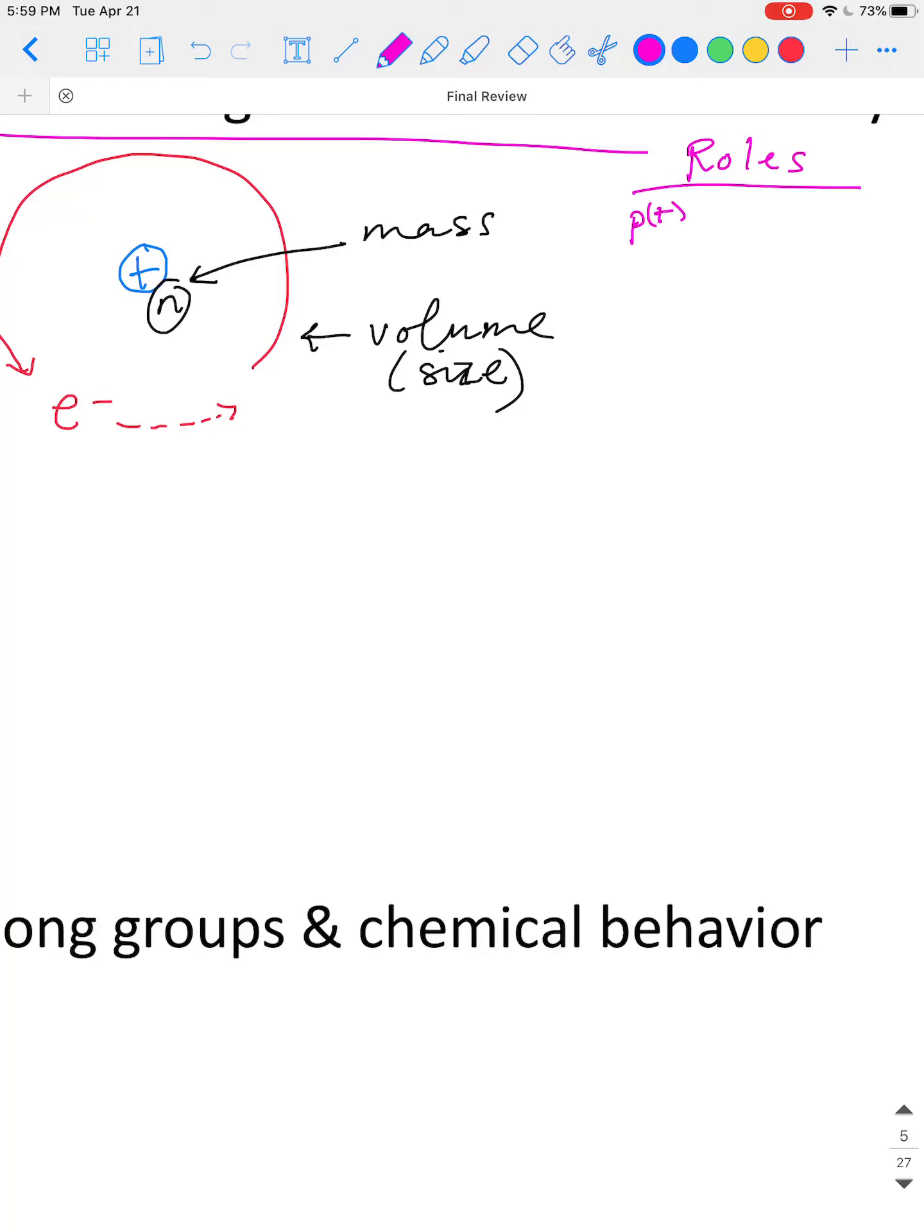And electrons are what are responsible for the chemistry of an atom. So if I zoom in over here, the different roles these things have. So protons, these identify an atom and they make up the mass of an atom.